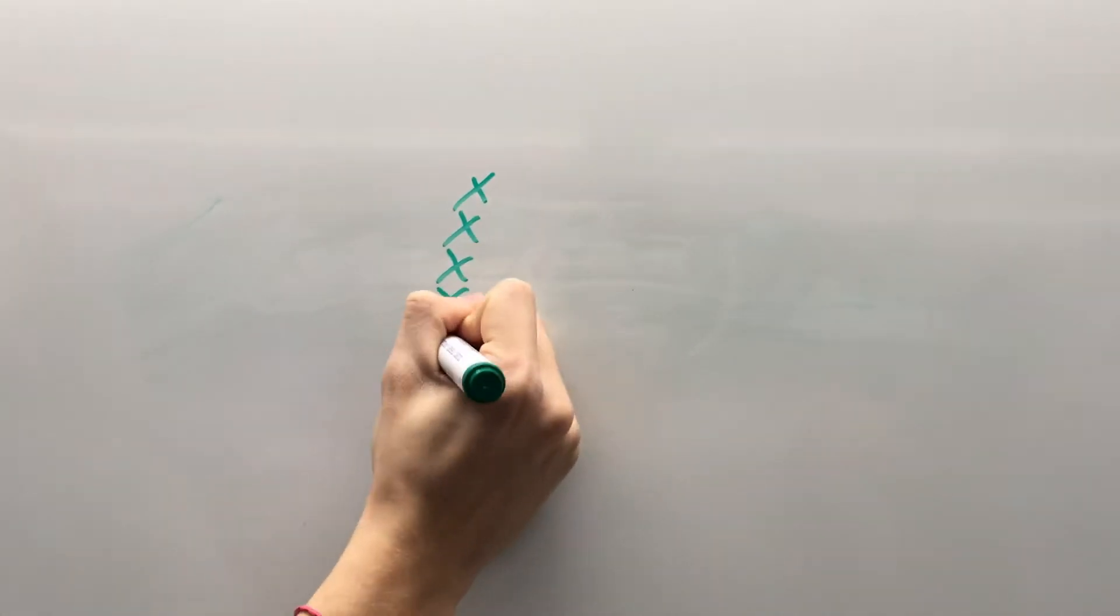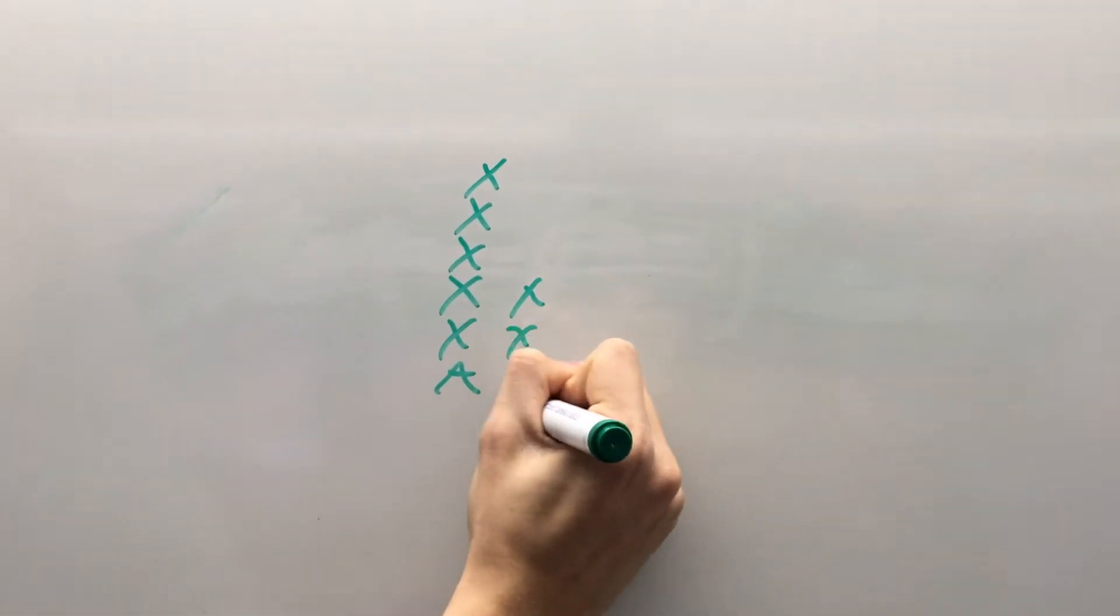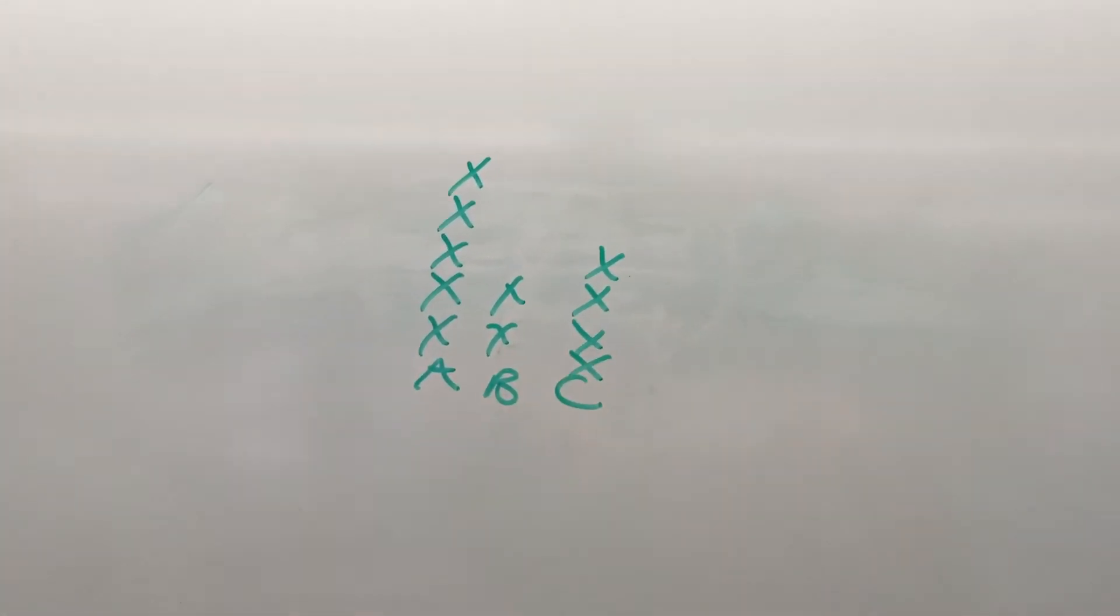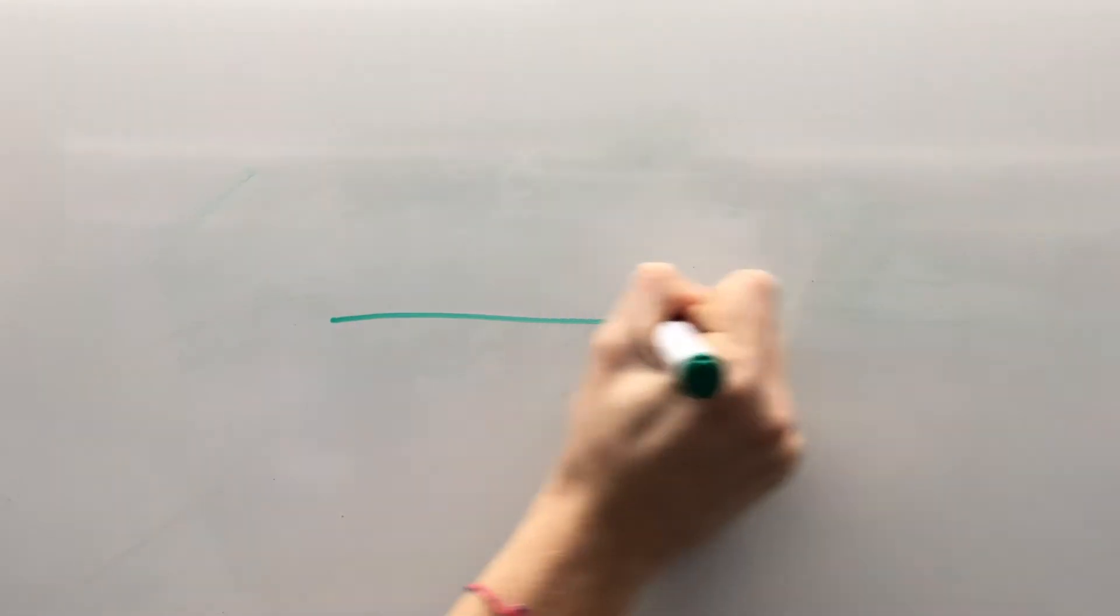To compute the coefficient of variation, we use the formula: standard deviation divided by mean. The highest one is 3.104 in the year 2003. The lowest one is 2.708 in the year 2013.